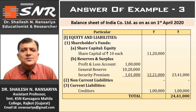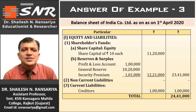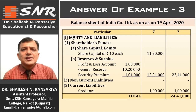After shareholders' funds, non-current liabilities: debentures were given in the old balance sheet, but we have redeemed them, so it is not required to mention here — Rs. nil. And last, current liabilities: creditors, same value Rs. 1,00,000. Total of the balance sheet on the equity and liabilities side: Rs. 24,41,000.